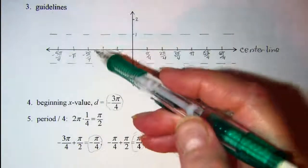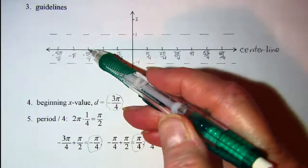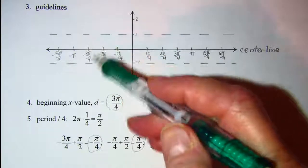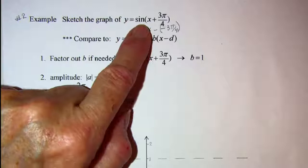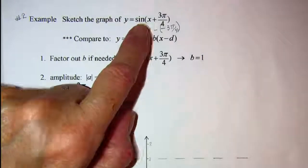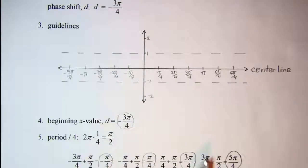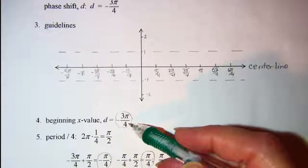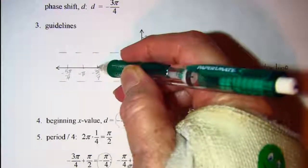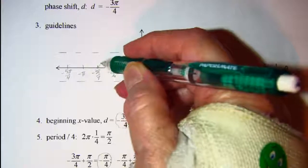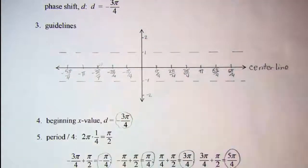So at negative 3 pi over 4, this is going to be where I'm going to start my curve. I need to remember this is a sine curve, it has a positive a value, so I'm going to start at the center line at negative 3 pi over 4, and head up.